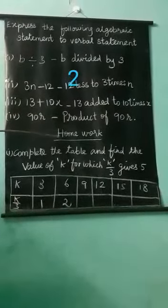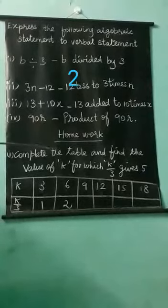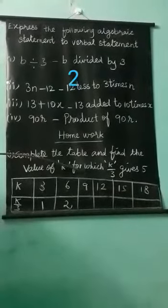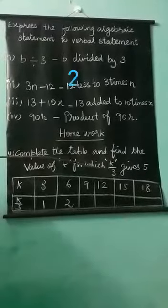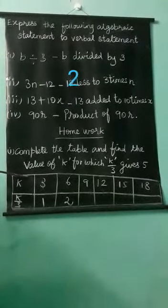Dear children, I give a homework for you. Complete the table and find the value of K for which K by 3 gives 5. K by 3 gives 5. Here, see the table.